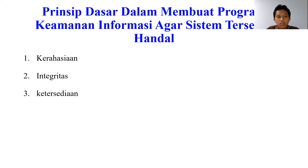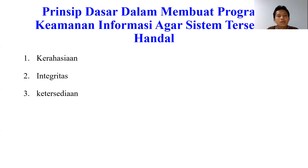Kemudian prinsip yang ketiga yaitu ketersediaan. Ketersediaan artinya ada jaminan ketika pihak berwenang membutuhkan informasi, maka informasi dapat diakses dan digunakan. Hambatan dalam ketersediaan ini contohnya adalah adanya denial of service (DoS) attack. DoS merupakan serangan yang ditujukan ke server, di mana banyak sekali permintaan palsu yang dikirim ke server, yang menyebabkan server tidak sanggup lagi melayani permintaan sehingga server menjadi down atau error.